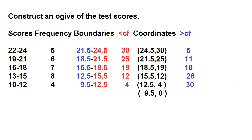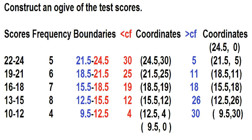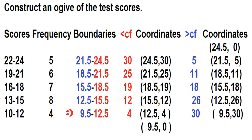Let's pair these values to the class boundaries for the coordinates of the more than ogive. How many students got scores greater than 24.5? The answer is 0. Greater than 21.5? The answer is 5. Greater than 18.5? 11. Greater than 15.5? 18. Greater than 12.5? 26. Greater than 9.5? 30.